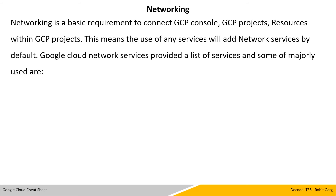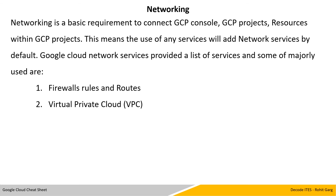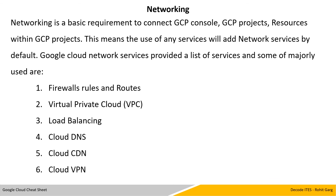Networking is a basic requirement to connect the GCP console, GCP projects, and resources within GCP projects. This means the use of any service will add network services by default, because without network connectivity you cannot connect to the Google Cloud console or access your projects and resources. Google Cloud network services include firewalls and routers, Virtual Private Cloud (VPC), Load Balancing, Cloud DNS, Cloud CDN, and Cloud VPN.